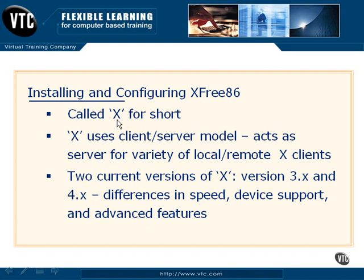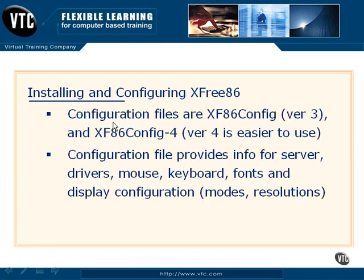There are basically two versions of X — version three and version four — which have different components built into them for speed, performance, and features. There are also two configuration files used to change the setup or functionality of X, one for each version. These files allow you to change settings such as drivers, fonts, and display options, and are commonly used to change your resolution and color modes as well.